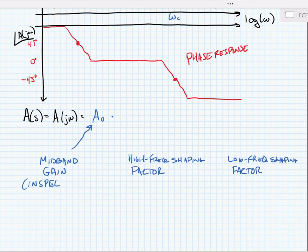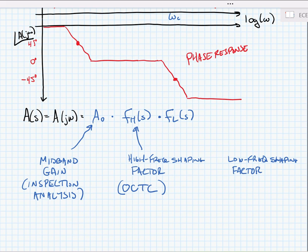We have a high frequency shaping factor Fh(s). We're going to use OCTC or open circuit time constant analysis for this. And later on we'll find a low frequency shaping function or low frequency shaping factor called Fl(s), and we'll use short circuit time constant or SCTC for this.